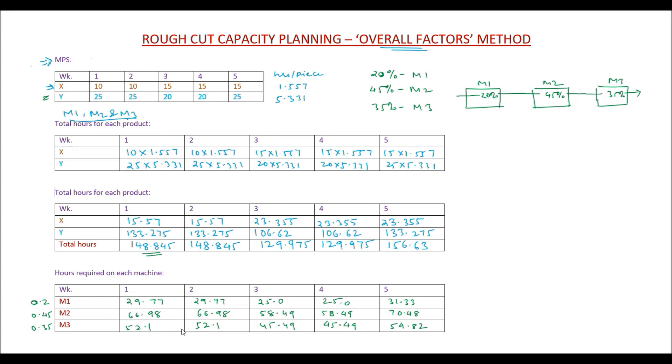This method is a very rough method, as it is done at a very high level. The bill of material and the detailed routing is not considered in this method. However, it gives a fair idea of what is the capacity required and what is available.